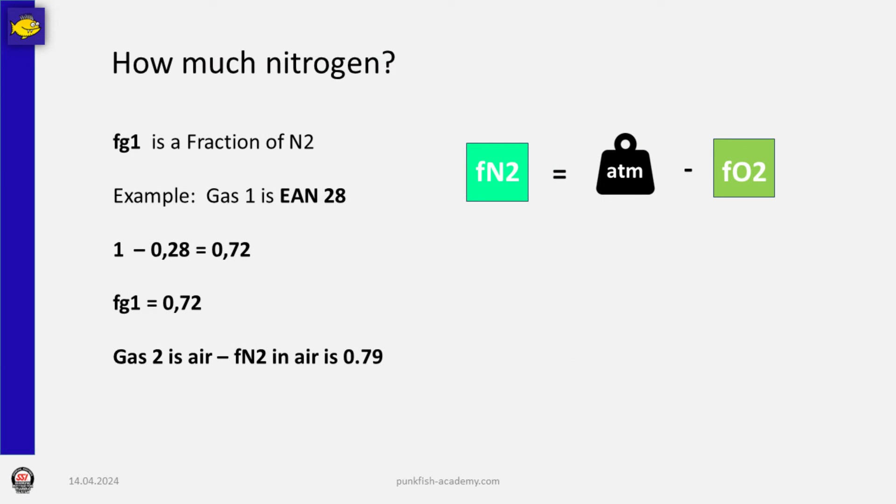First step is very easy. The first thing we need to do is to find out how much nitrogen we have in our gas. Now we take as an example a nitrox 28, and in a nitrox 28, 28% are oxygen, means 70% are nitrogen. So we have this fraction of our first gas, the nitrogen fraction of 0.72, and we have a second gas. The second gas is air. The nitrogen in air is 79%, so the fraction would be 0.79.